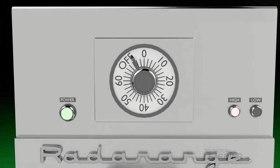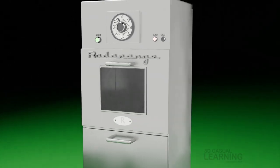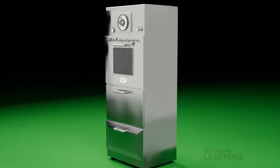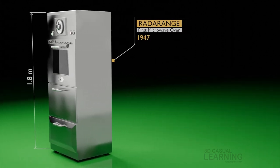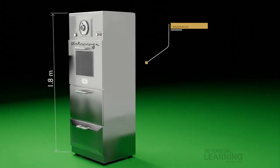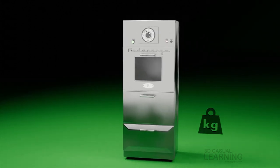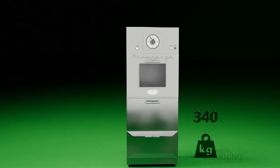Two years later, the first microwave oven was introduced commercially, called Radarange. The size was almost 1.8 meters in length and weighed 340 kilograms, which cost more than $2,000.